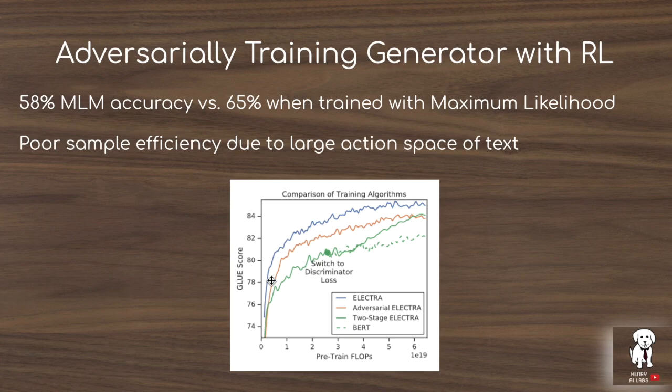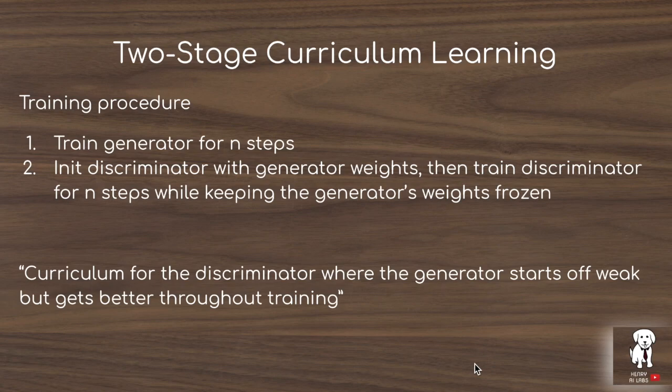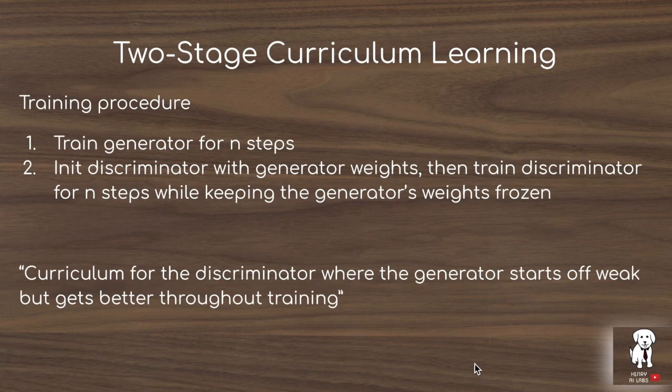The authors also experiment with a two-stage curriculum learning strategy. They start by training the generator for N steps, then initialize the discriminator with the generator's weights, since both take a similar input-output representation. One could also imagine scaling up the discriminator size while preserving the original generator function, similar to Net2Net and related work on transferring from lower to higher capacity models.